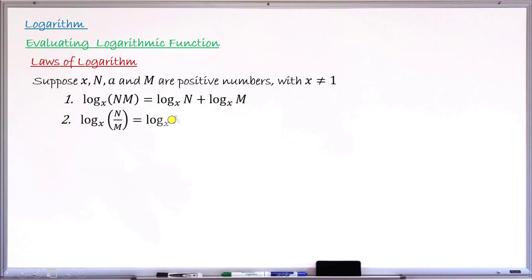Law 2 says if you have the logarithm to base x of n divided by m, that logarithm is equal to the logarithm to the same base x of n minus the logarithm to base x of m. These two laws are very useful and vital while simplifying and evaluating logarithmic functions.